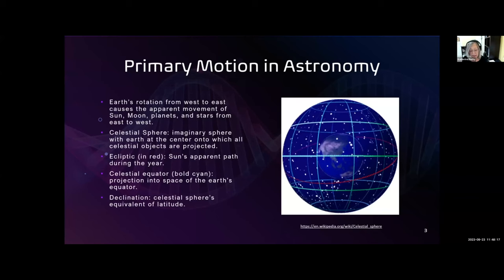A bit of terminology that we'll be using to describe and measure the primary directions are the celestial sphere, which is an imaginary sphere that encompasses the Earth at the center. The ecliptic is the line that the Sun goes through in its annual trip around the Earth, and that's in red here. The celestial equator is a projection into space of the Earth's equator, and declination, which are these blue lines, is the celestial sphere's equivalent to latitude.